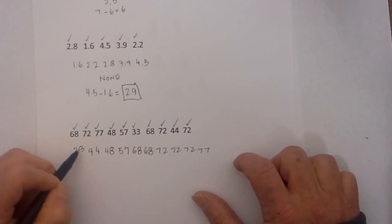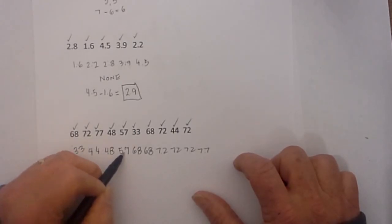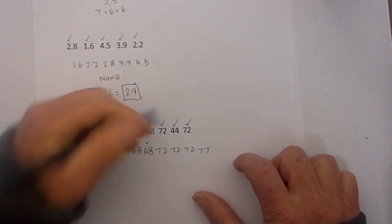We see now to find the mode, 33 is once, 44 once, 48 once, 57 once. So we have 2 68's and we have 2 68's.